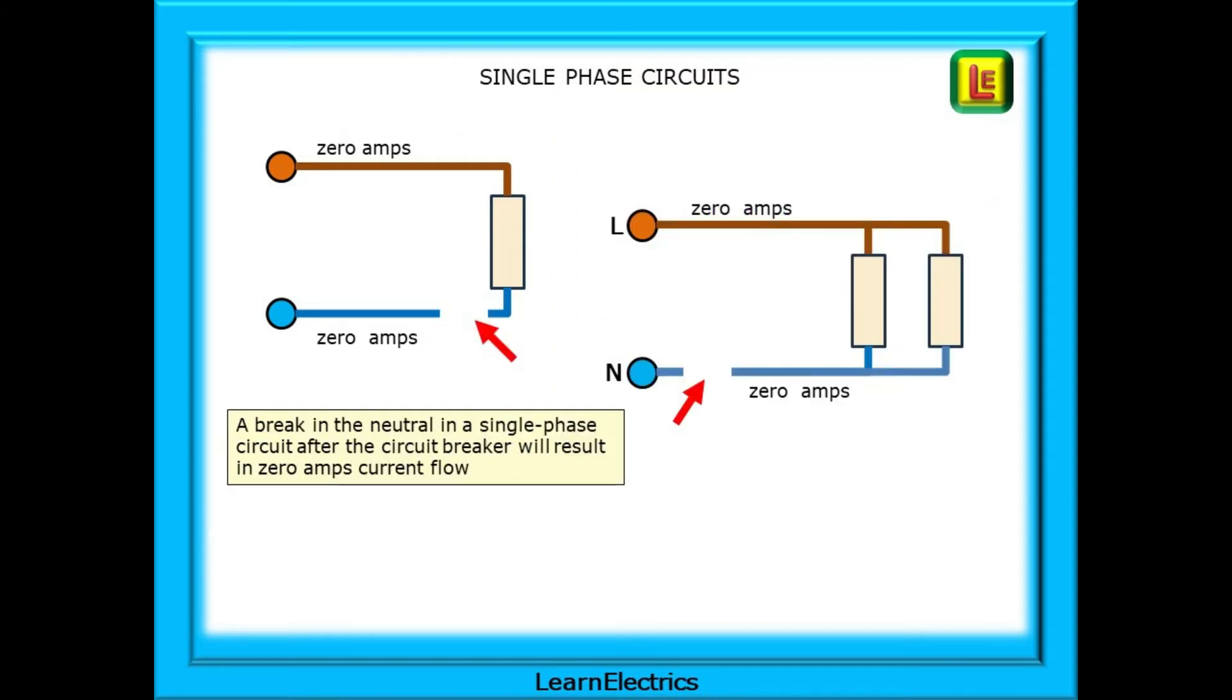When we talk about single-phase circuits losing a neutral, we're looking at problems in the final circuit part of an installation, the wiring after the circuit breaker. A break in the neutral in a single-phase circuit after the circuit breaker will result in zero amps current flow. If the neutral to the cooker, for example, is broken, the cooker will not work. Yes, there might still be electric at the cooker, but it will not be damaged, it just stops working.